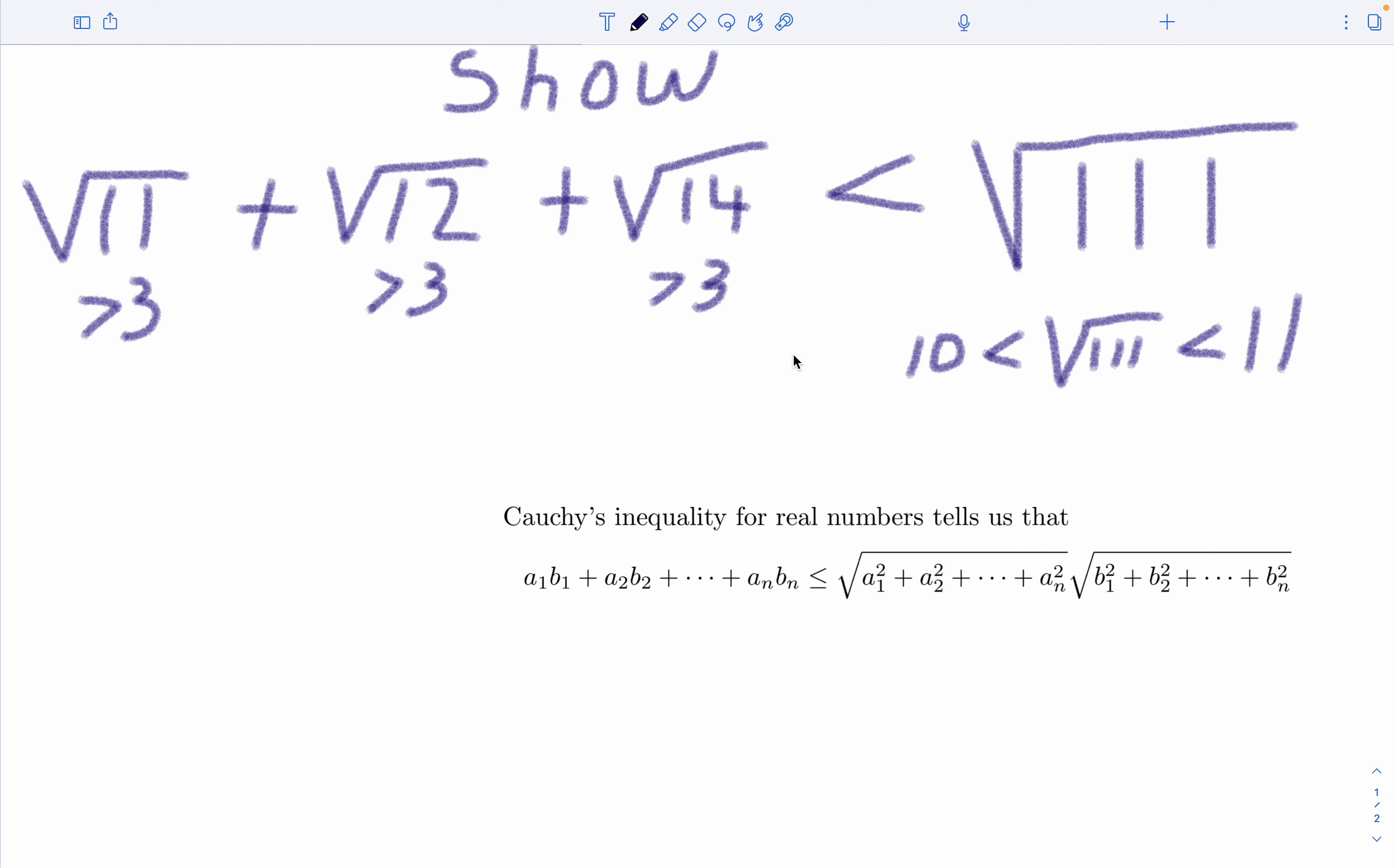Now it turns out that this is an ideal problem for the Cauchy-Schwarz or something called the one trick. Let me write that down. The one trick. Mathematics, after all, is a big bag of tricks.